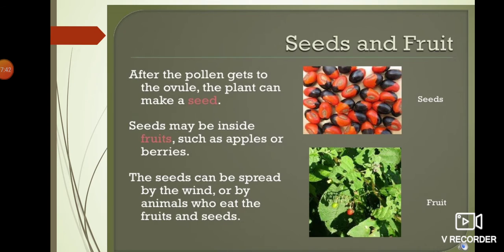After the pollen gets into the ovule, the plant makes a seed. Seeds may be inside fruits. Most of the seeds are inside fruits, such as apples, oranges, berries, and vegetables like tomato, cucumber, and ladies' finger. The seeds can be spread after the fruits ripen - seeds can be spread by the wind, by animals, or by persons who eat the fruits and seeds. That we can see in seed dispersal.